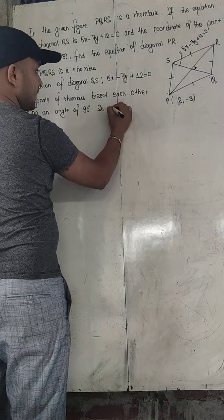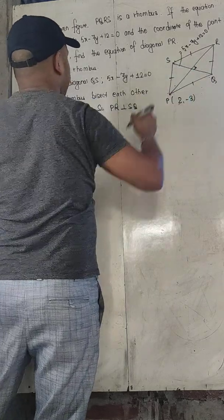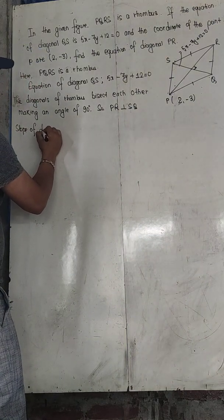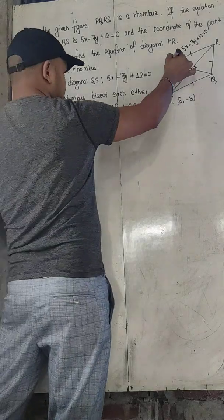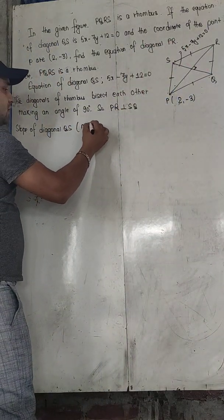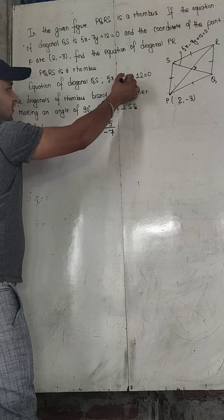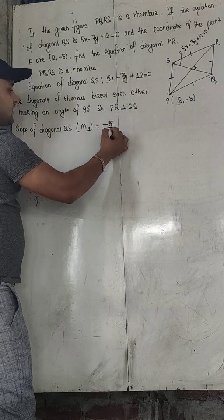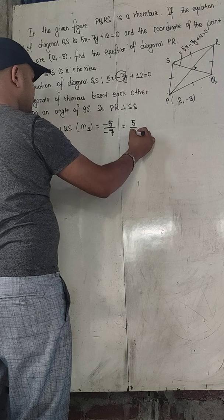So we can say that QS is a perpendicular bisector of the line PR, and also that PR is perpendicular to QS. This line and this line are perpendicular to each other. Now we can find the slope of diagonal QS. The formula is minus coefficient of X over coefficient of Y. Coefficient of X is 5 and coefficient of Y is minus 7.